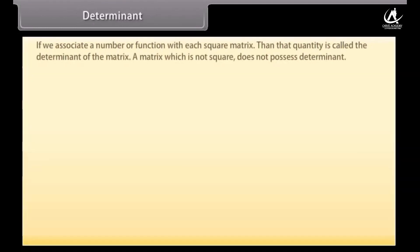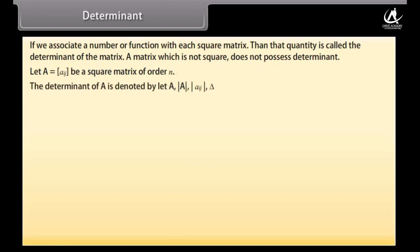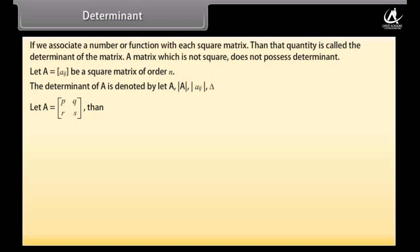Determinant. If we associate a number or function with each square matrix, then that quantity is called the determinant of the matrix. A matrix which is not square does not possess a determinant. Let A = [a_ij] be a square matrix of order n. The determinant of A is denoted as det(A). For a matrix with first row p, q and second row r, s, the determinant can be written accordingly.